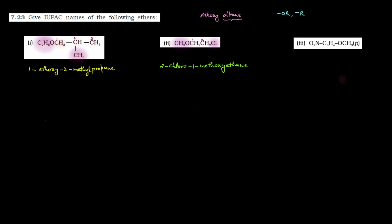Ab hum dekhte hain third part. Yahan given hai NO2-C6H4-OCH3 with bracket P, matlab para position. Toh yeh structure draw karna padega — ek benzene ring, agar yahan NO2 le lein toh para position par kya hai? Para position par hai OCH3. Ab iska naam kaise likhenge? Parent chain obviously benzene ring hogi. Substituents ki numbering kaise karenge? OCH3 aur NO2 — jiska alphabetical order mein pehle naam aayega use pehla number denge.